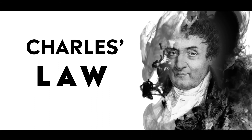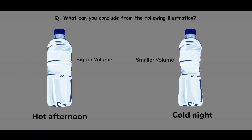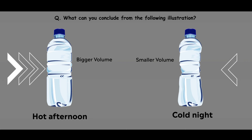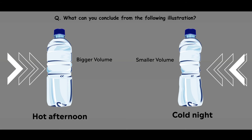Now we'll talk about Charles' Law. What do you conclude from the following picture? During a hot afternoon, an empty bottle has a bigger volume, but the same empty bottle kept outside during a cold night has a decreased volume. The independent variable is temperature — high during the hot afternoon, low during the cold night. As temperature changed, the volume changed with it: bigger volume in the heat, smaller volume in the cold.